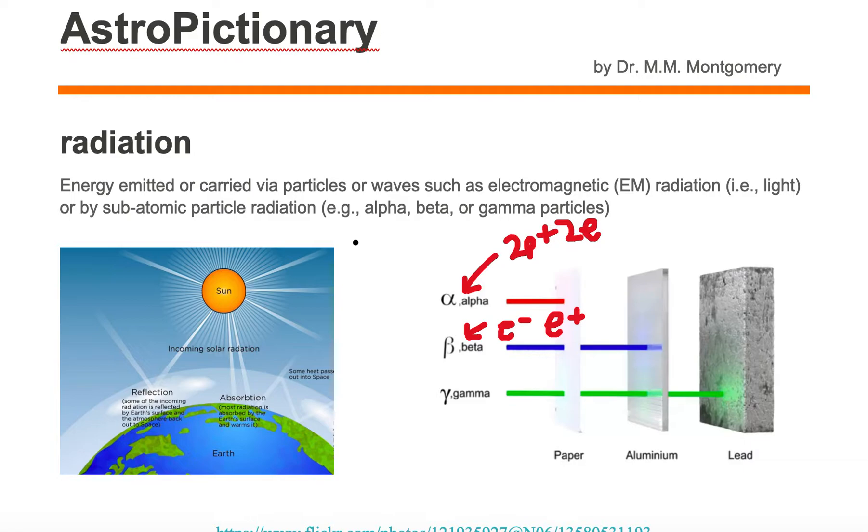Now, radiation can also be from high-energy, high-speed moving charged particles, such as alpha particles and beta particles.